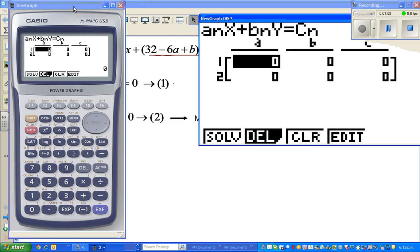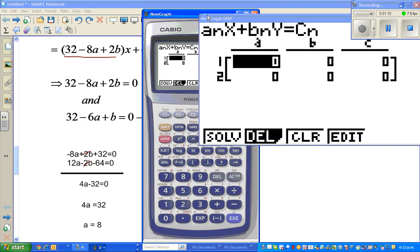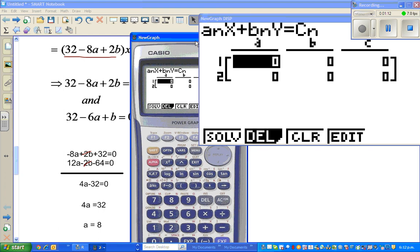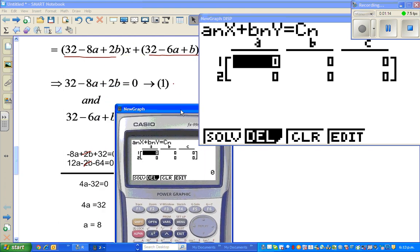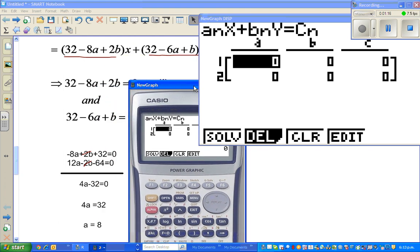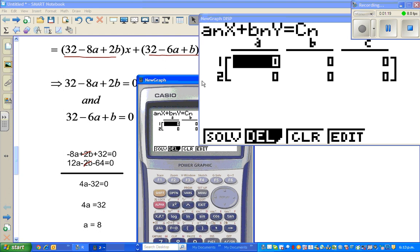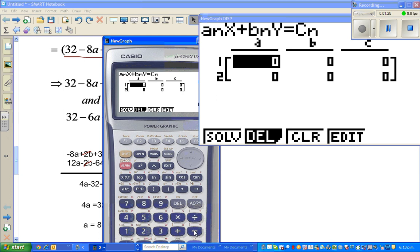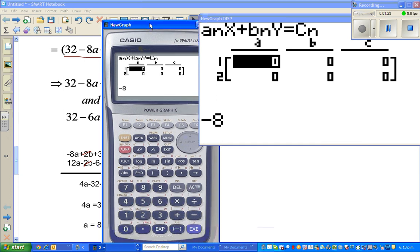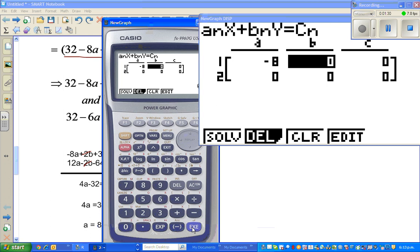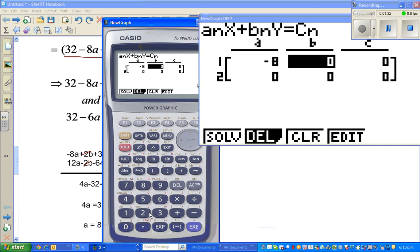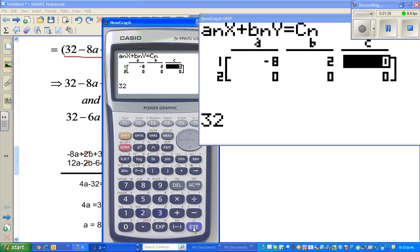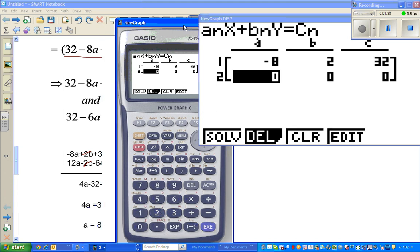Here is equation. Then if you go to simultaneous, you've got two unknowns. I'll put a: enter -8, execute, 2, and 32—that's the first equation.